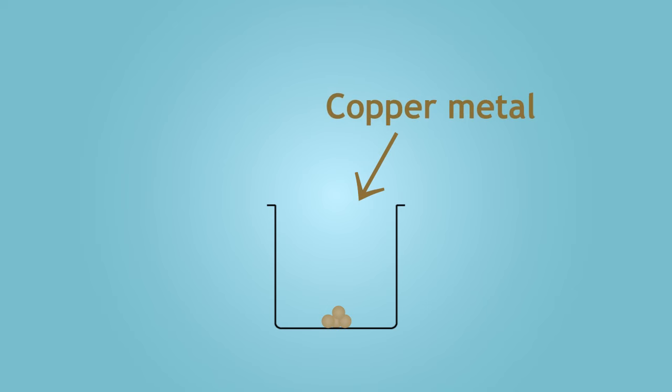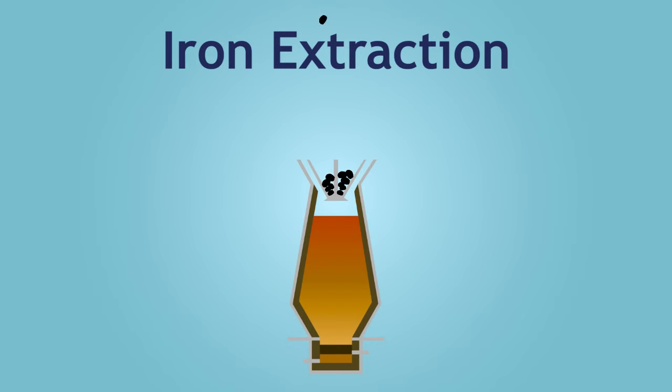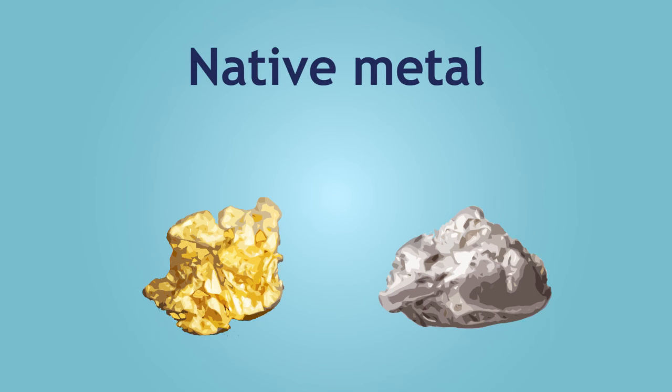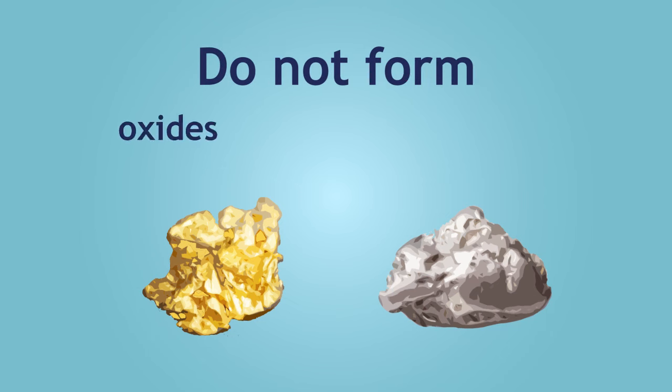In another lesson, you will learn how to extract iron using a form of carbon known as coke. Some metals, such as gold and platinum, are not found in ores, but rather exist naturally as native metal. Note that these are less reactive metals and therefore do not form oxide, sulfide, or carbonate compounds.